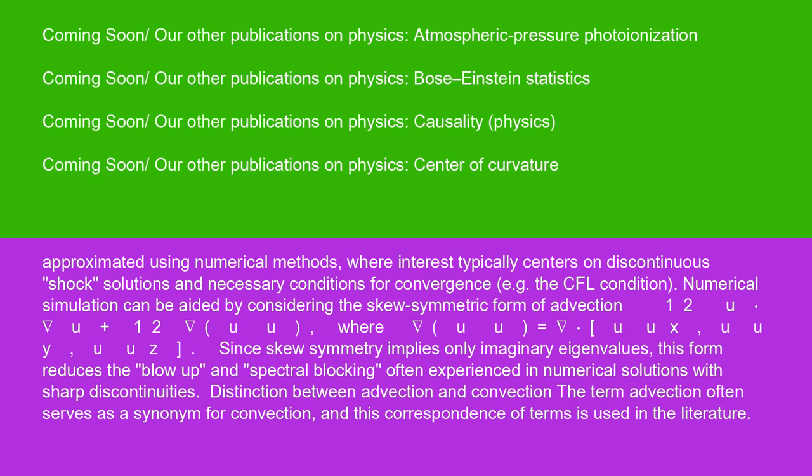Or ∇(u·u) = ∇(uux, uuy, uuz). Since skew symmetry implies only imaginary eigenvalues, this form reduces the blow-up and spectral blocking often experienced in numerical solutions with sharp discontinuities.